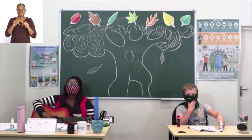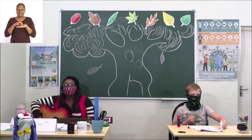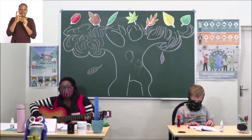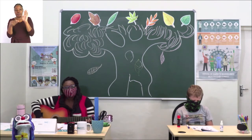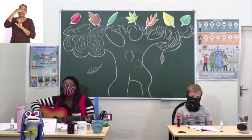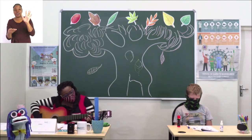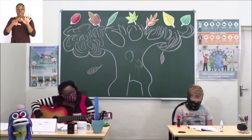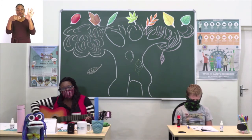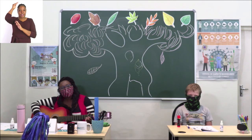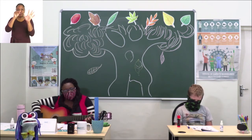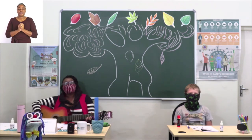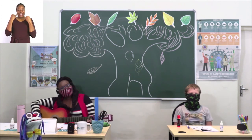Are we ready everybody? Are you ready Zashi? Okay let's go! One, two, three, go! The leaves are falling, leaves are falling, leaves are falling, one fell on my nose. Leaves are falling, leaves are falling, one fell on my toes. Leaves are falling, leaves are falling, one fell on my head. Leaves are falling, leaves are falling, yellow, orange, red! Wow, I enjoyed that. Zashi, did you enjoy that? Wonderful!